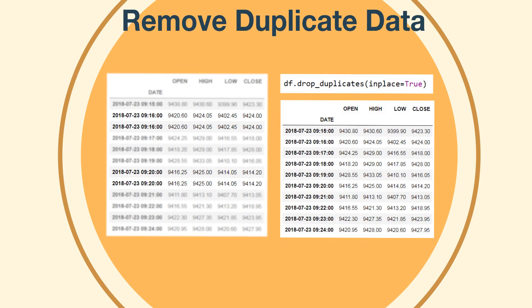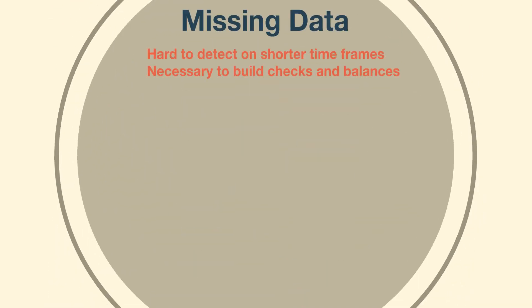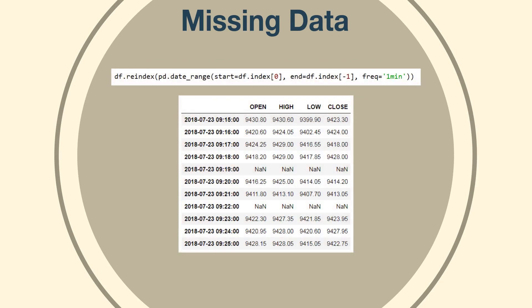Missing data is another data quality issue. This can be hard to detect, especially in the case of shorter time frames like tick-by-tick data. On time frames like minute data or daily data, one can build a check in the code to detect missing data. In Python, we can use the reindex method to detect missing data for a specific frequency, and missing values can be filled using the previous values or by any other method.